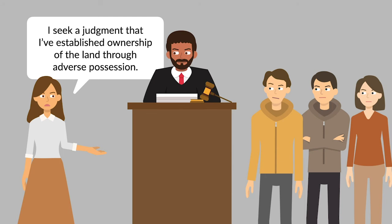Carpenter sued in equity, seeking a judgment that she'd established ownership of the land through adverse possession. She argued that for more than 30 years, she'd been in open, exclusive, hostile, adverse, and actual possession of the property under claim of right.